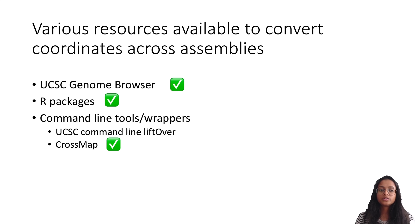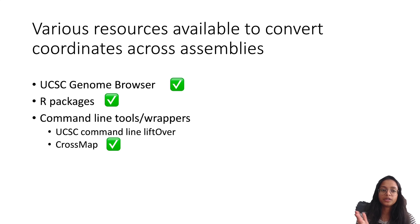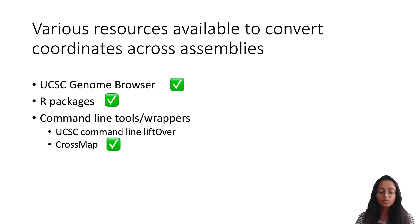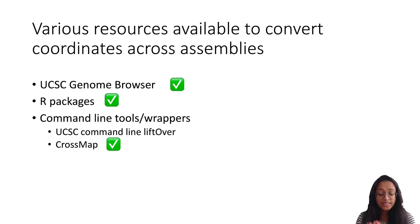The command-line version of LiftOver is also available. Additionally, there are command-line tools and wrappers that aren't LiftOver-based but provide different solutions to convert coordinates across assemblies or across species. One example is CrossMap, which I'll be demonstrating today. It's a great tool because it supports a wide range of NGS file formats including SAM, BAM, BigWig, BED, GTF, GFF, and VCF files. It's Python-based and arguably very fast compared to other options, especially when dealing with big BED or BAM files.